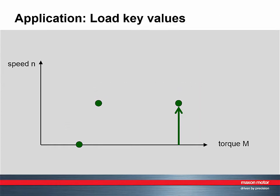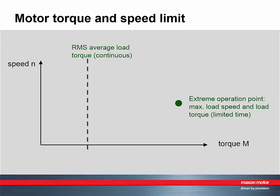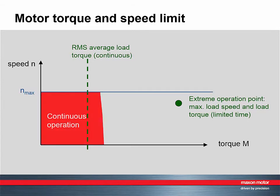Regarding torque, we condense all the operation points into a few key values: the average RMS load torque and the extreme operation point. Let's first look at speed. We need a motor with a speed limit that is high enough to cover all operating points.